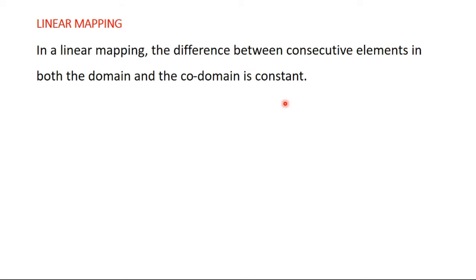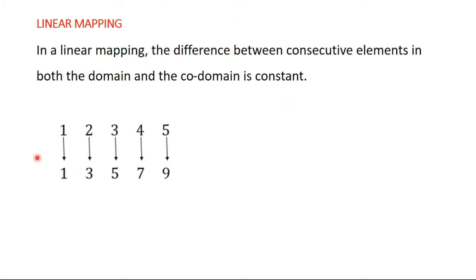In a linear mapping, the difference between consecutive elements in both the domain and the codomain is constant. We have seen that one-to-one relations and many-to-one relations are mappings, and basically we are going to consider one-to-one relations. So in linear mapping, the difference between consecutive elements in both the domain and the codomain are constant. Let's look at this mapping — you can see that this is an example of a one-to-one relation, so it's a mapping.